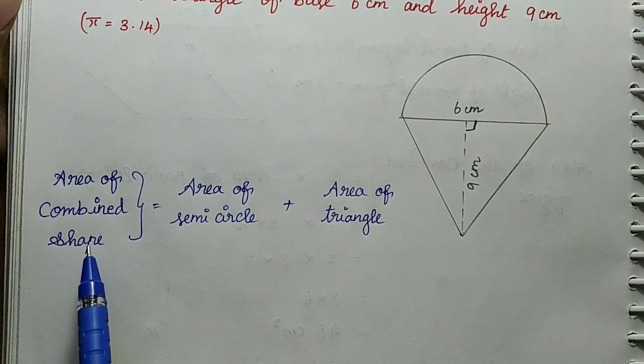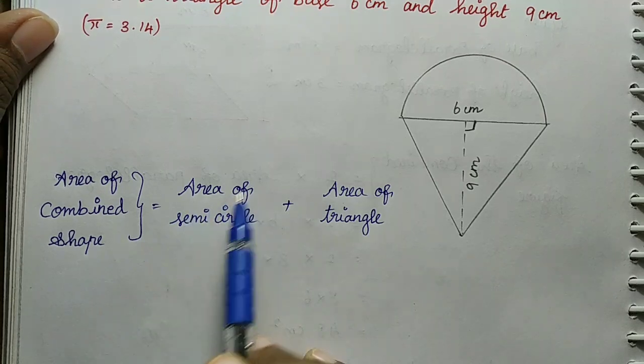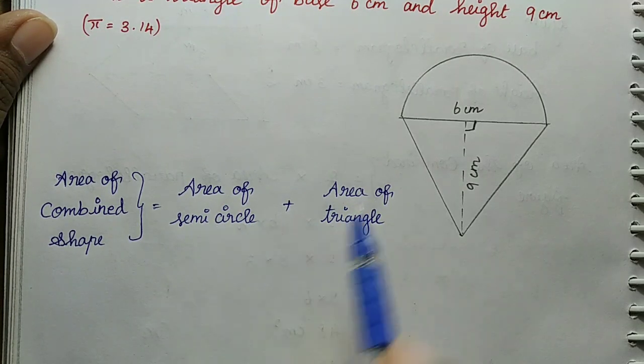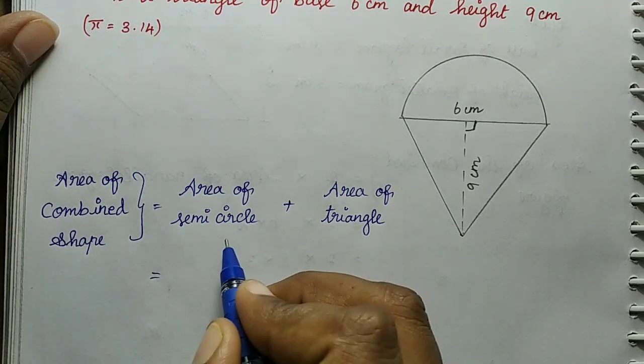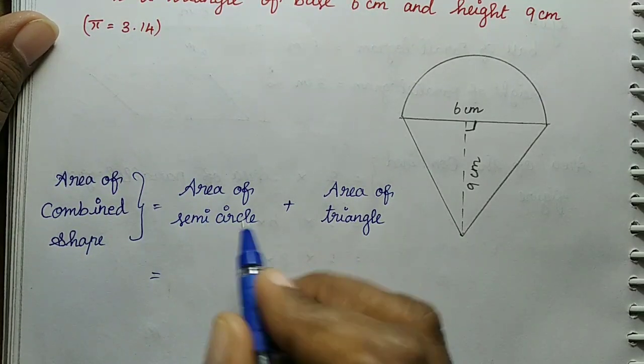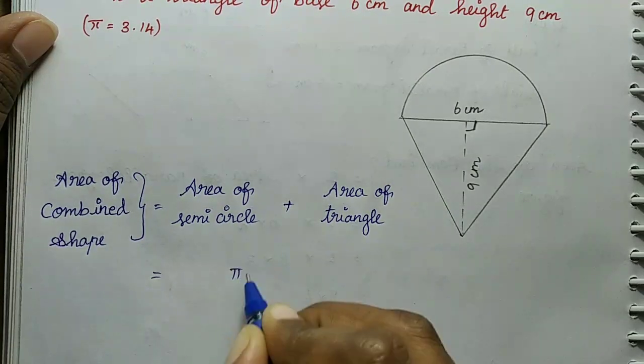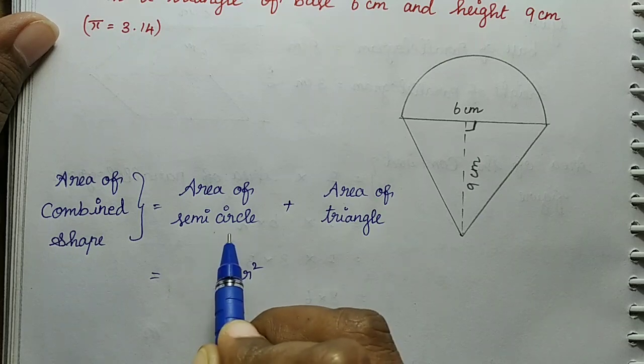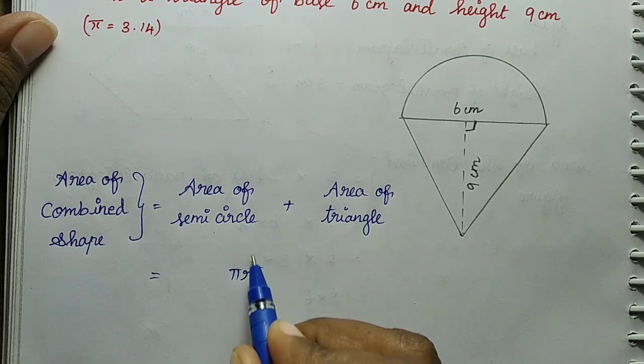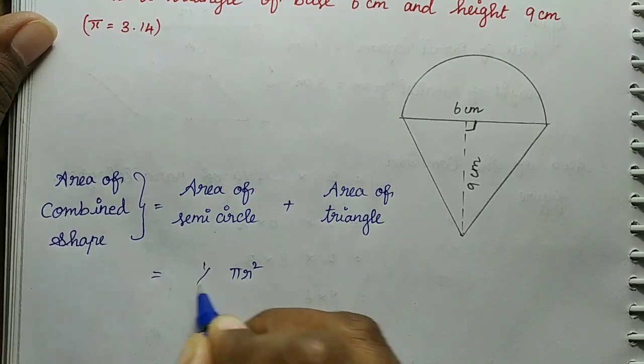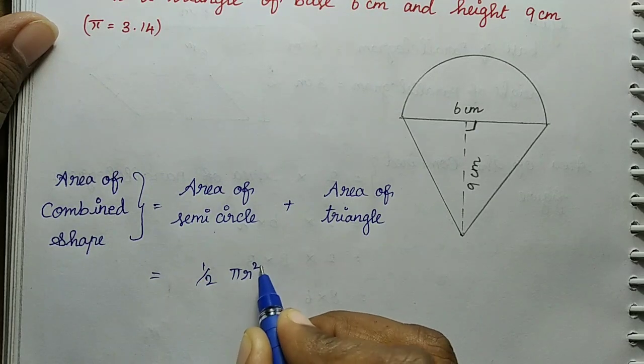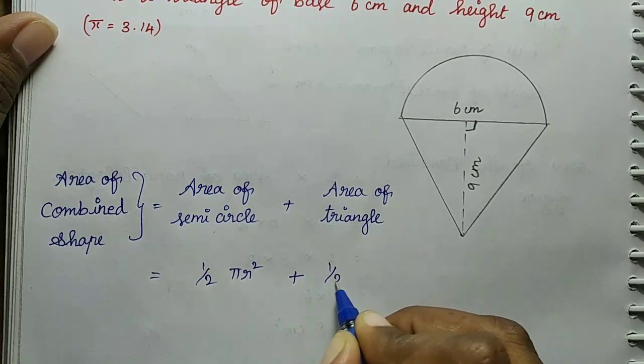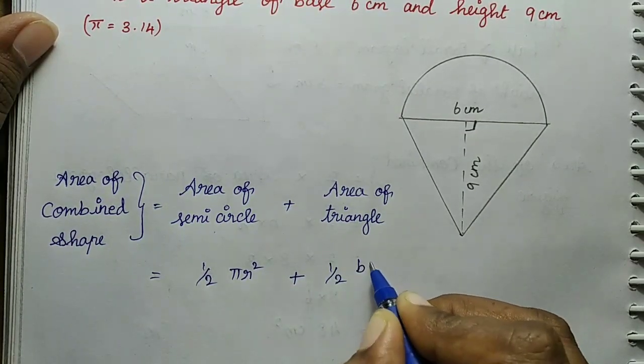The area of the combined shape equals area of semicircle plus area of triangle. The formula is: area of semicircle equals 1/2 πr², and area of triangle equals 1/2 × base × height. So the total is 1/2 πr² + 1/2 bh.